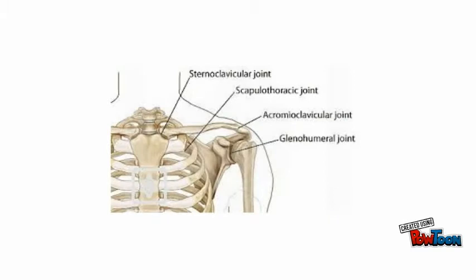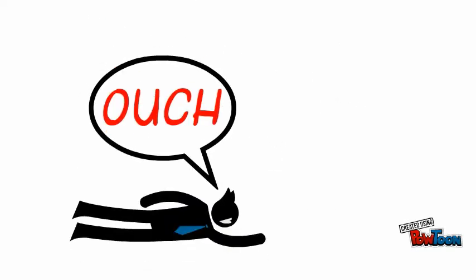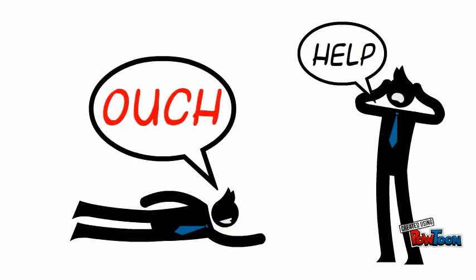It creates the sternoclavicular joint where it attaches to the breast bone. It is most commonly fractured when a person falls horizontally onto the shoulder or with an outstretched hand.